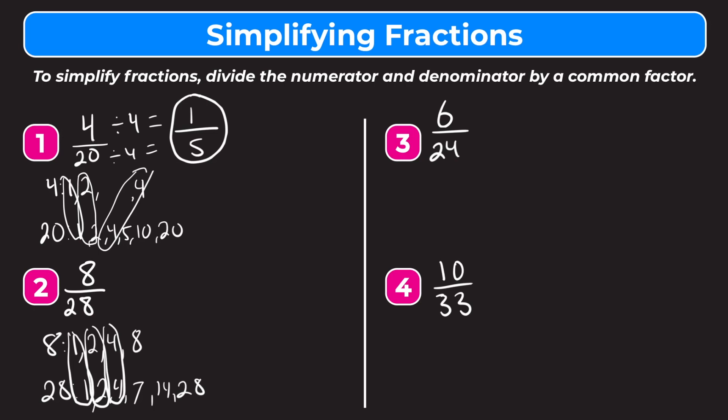So 4 is our greatest common factor, and we'll divide both by 4. 8 divided by 4 equals 2, and 28 divided by 4 equals 7. We check: do 2 and 7 have any common factors other than 1? No, they do not. So 2 sevenths is our simplest form, and we are done.